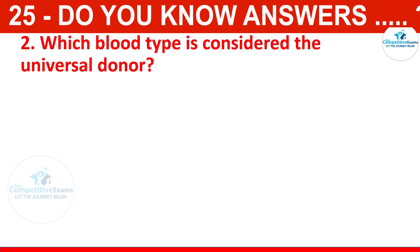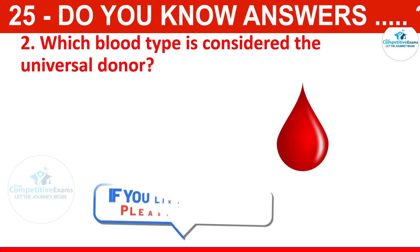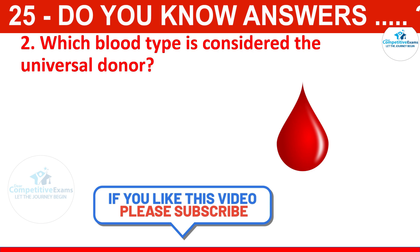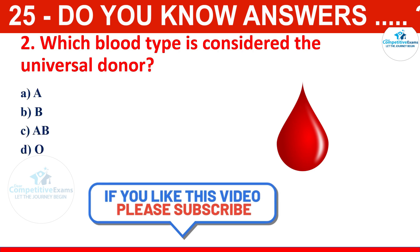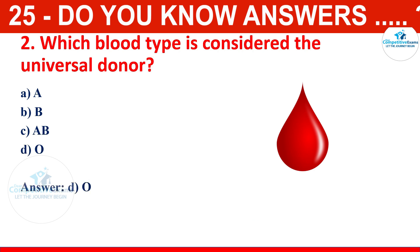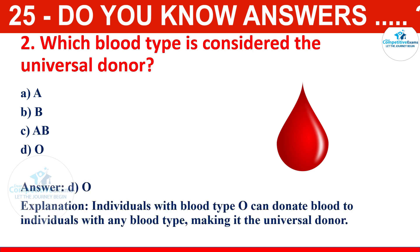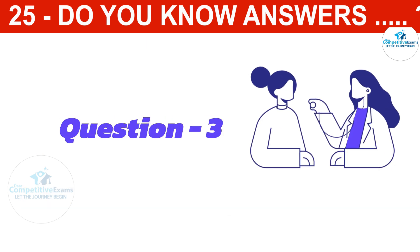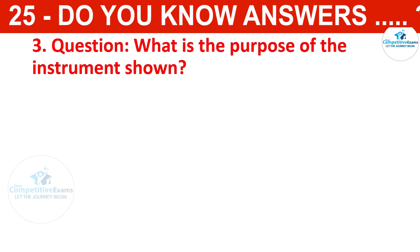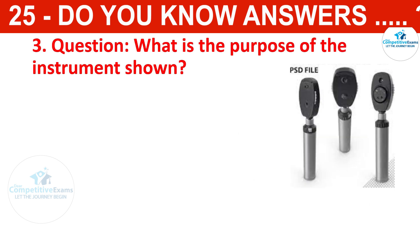Which blood type is considered the universal donor? The options are A, B, AB, or O. The correct answer is O. Individuals with blood type O can donate blood to individuals with any blood type, making it the universal donor.